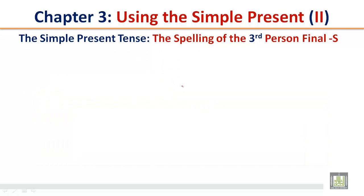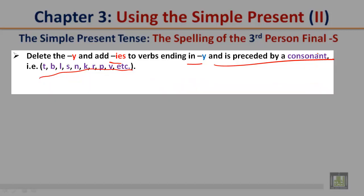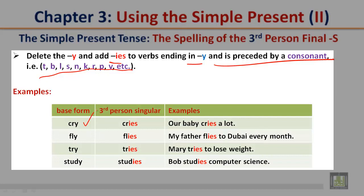The spelling of the third person singular final S: delete the Y and add IES to verbs ending in Y preceded by a consonant — for example T, B, L, S, N, K, R, P, V, etc. A consonant is anything that is not a vowel. Vowels are A, E, I, O, U. For example, 'cry' — delete the Y, it becomes 'cries'. The R is a consonant, so when Y has a consonant before it, you add IES.